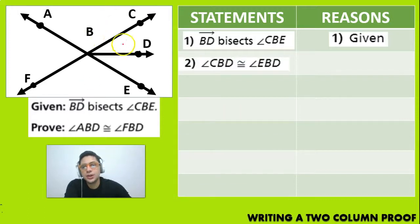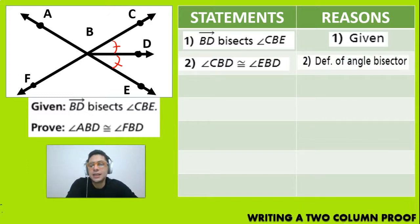Now, because we know that this angle and this angle are going to be congruent because they are going to be bisected. The angle CBE, we are going to write down that the angle CBD is actually congruent with angle EBD. And it is because of the definition of angle bisector, which you have to remember from eighth grade.